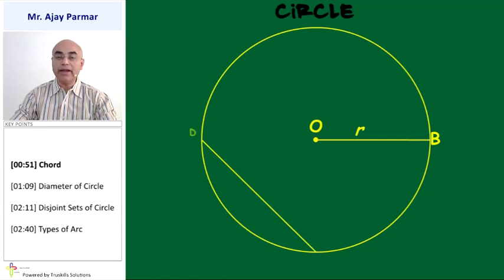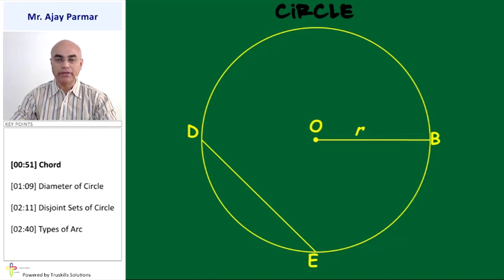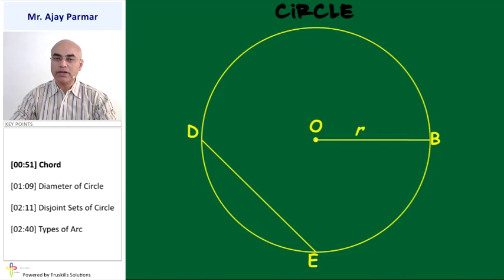If we join any two points on the circle — in this case, line segment DE, where D and E are on the circle — then such a line segment is called a chord. A given circle will have an infinite number of chords.